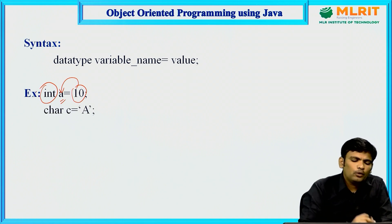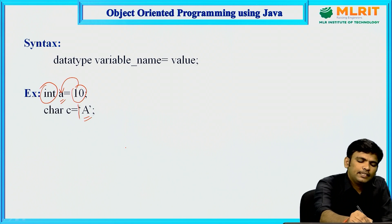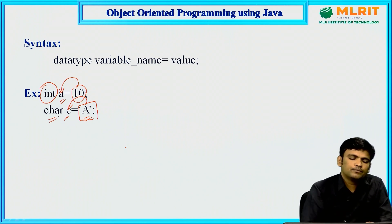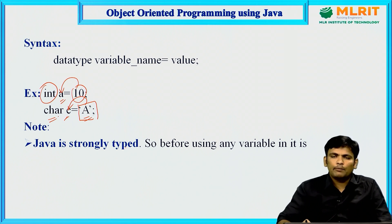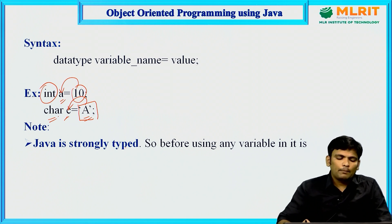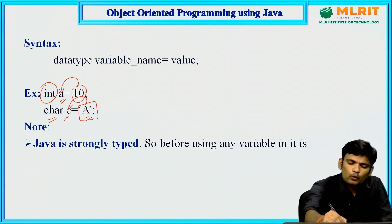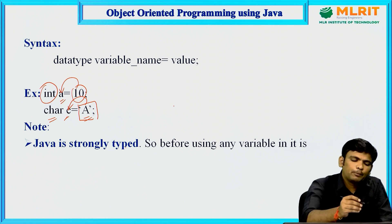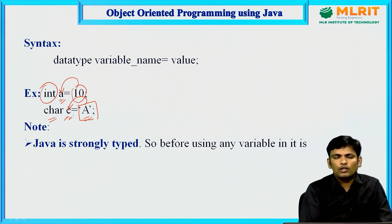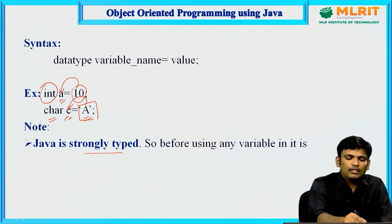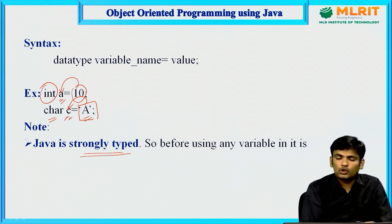For example, int a = 10 means 10 is the actual value assigned to a, which is of type integer. For a character: char c = 'A', where A is the actual value assigned to variable c of character type. Java is a strongly typed programming language. Unlike Python, which is not strongly typed — in Python you can use a variable without declaring it — but in Java, you must declare every variable before use, otherwise it throws a compile-time error.